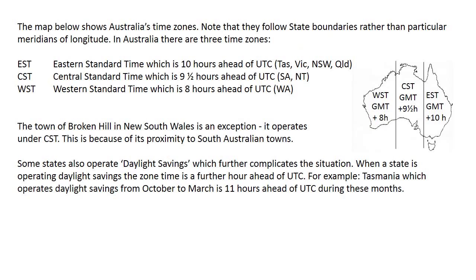In Australia, we have three time zones: Eastern Standard Time, Central Standard Time, and Western Standard Time. Some states also operate daylight savings, which further complicates the situation. When a state is operating daylight savings, the zone time is a further hour ahead of Universal Time Coordinated.